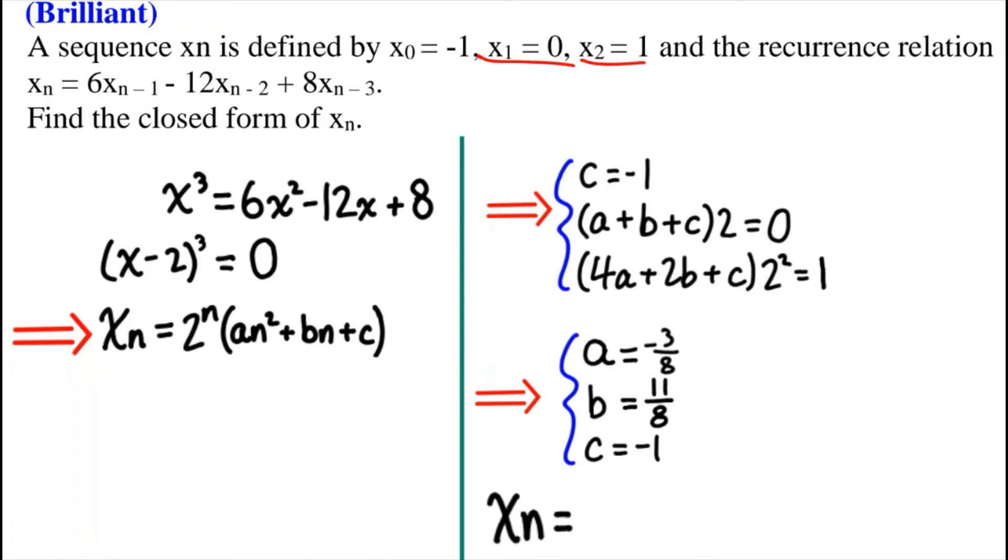In the recurrence relation, xn equals 6 times xn minus 1 minus 12xn minus 2 plus 8xn minus 3. Find the closed form of xn.